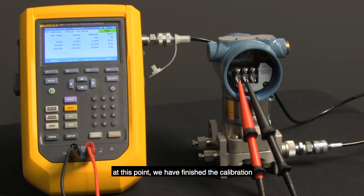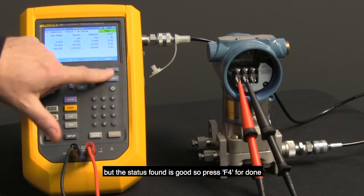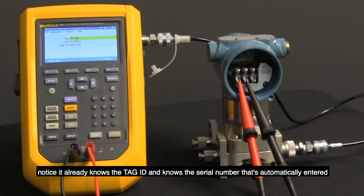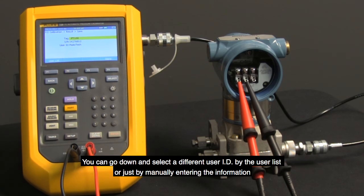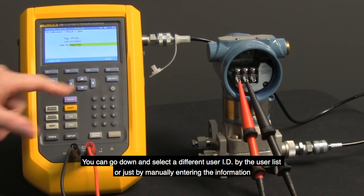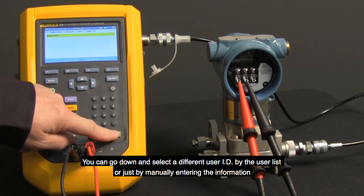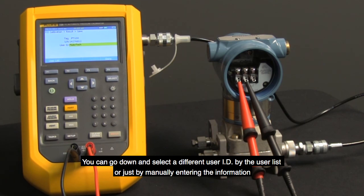At this point, we have finished the calibration. If it was out of spec, we'd have to make adjustments and then do an as left, but the status found is good. So press F4 for done. Notice it already knows the tag ID and serial number that's automatically entered. You can go down and select a different user ID by the user list or just by manually entering the information.